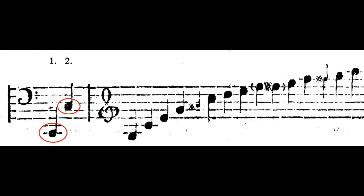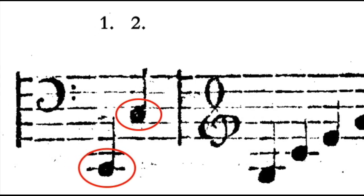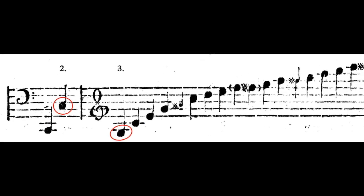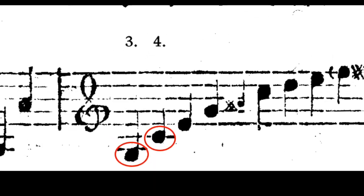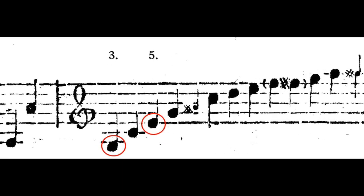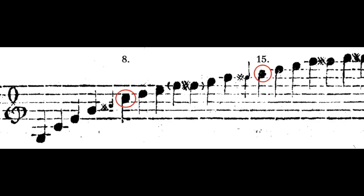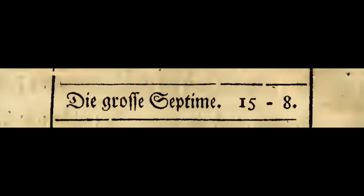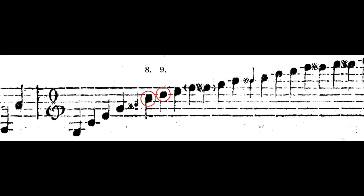The first interval we find is the octave with the ratio 1 to 2. The second interval is the fifth with the ratio 2 to 3. Then comes the fourth with 3 to 4, the major third with 4 to 5, the major sixth with 3 to 5, the major seventh with 8 to 15, and we have the big whole tone 8 to 9.